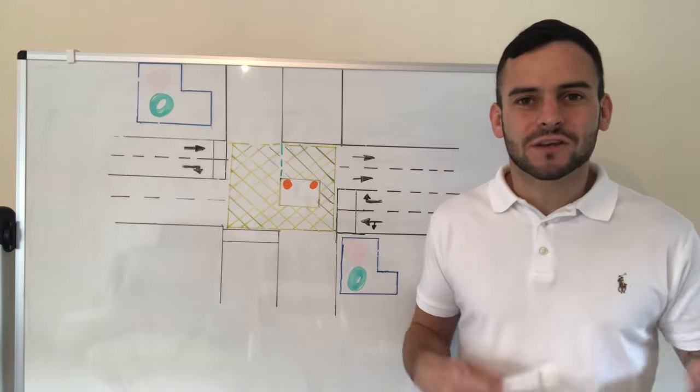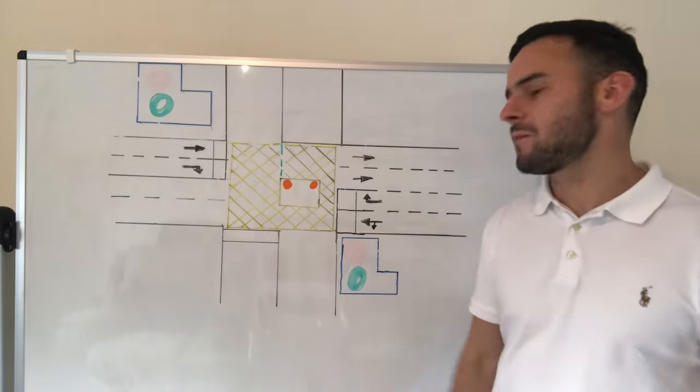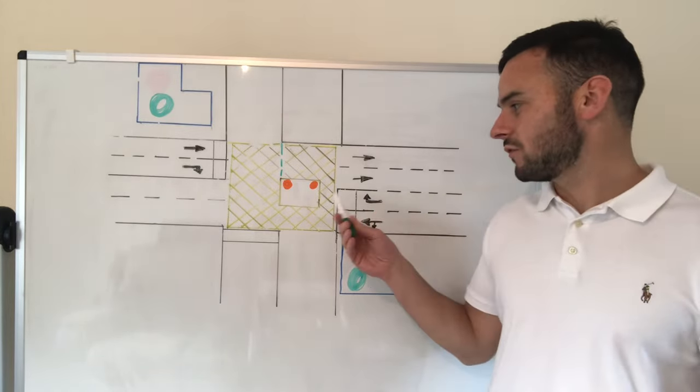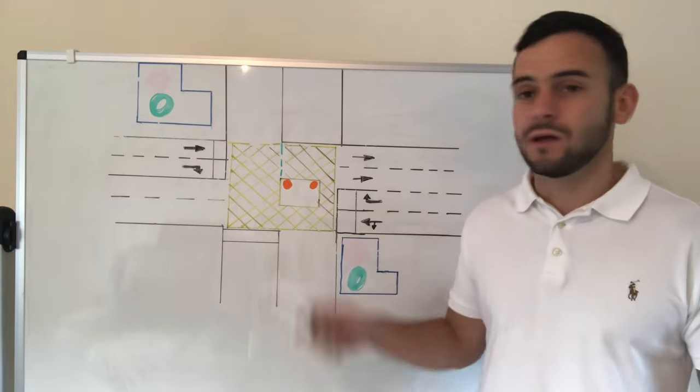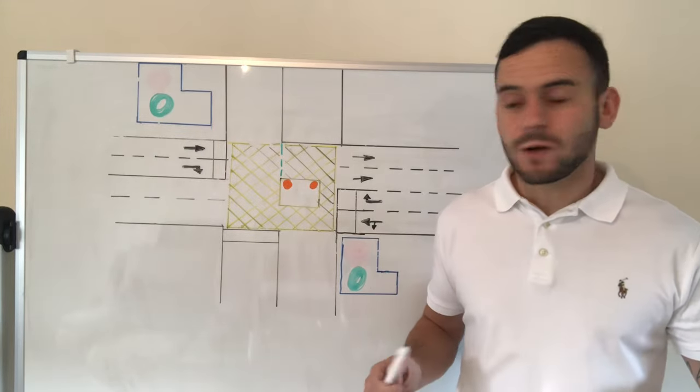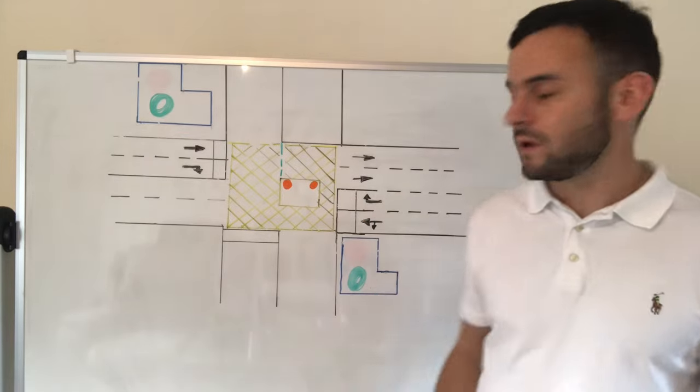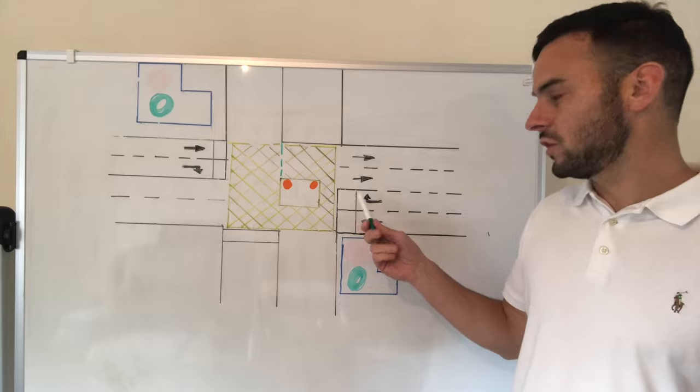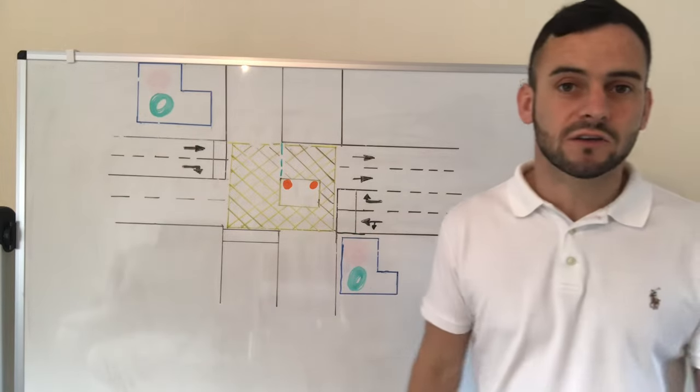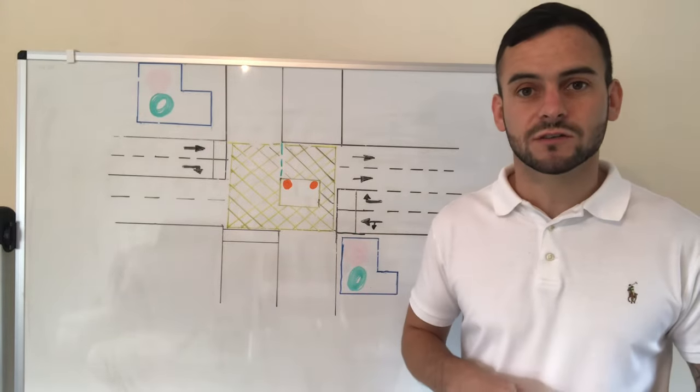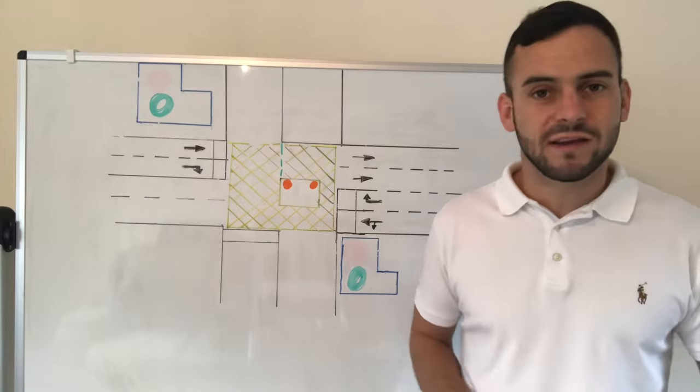The reason why I say this for the smaller junctions is usually what will happen is the first car will go up and stop. They could stop anywhere—they could literally just stop right in front here. If you follow them up, it means you're going to be across this cycle box, you could be across a pedestrian crossing, and it's a really bad place to be stopped.